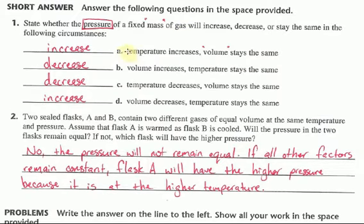Now, in A, it says when temperature increases but volume stays the same. So that means volume is not changing. It's constant. The mass of the gas, how much gas you have, is staying the same. And so it's asking you, truly, the relationship between pressure and temperature. So when temperature goes up, what will pressure do?